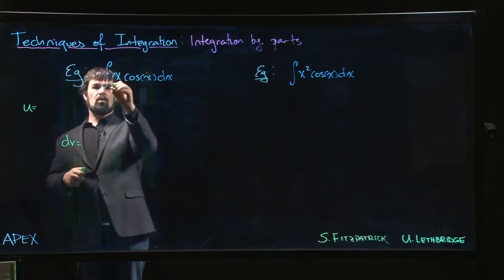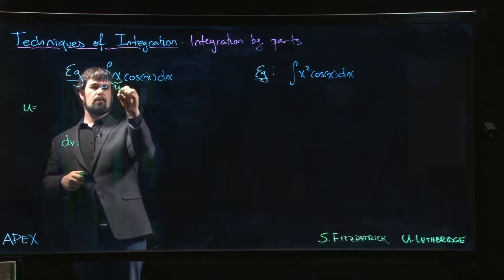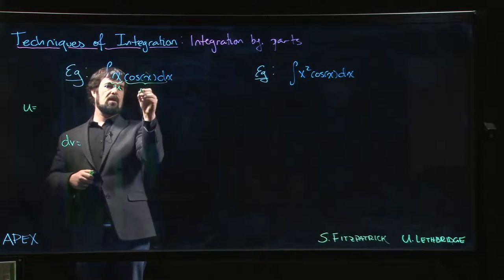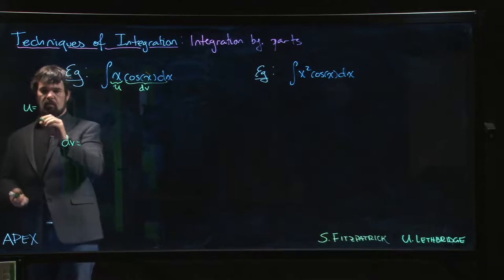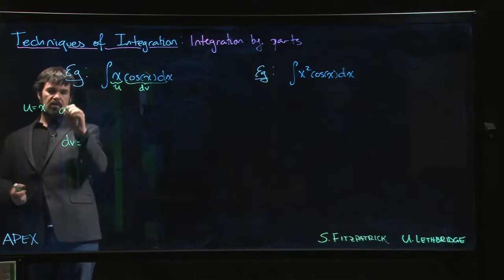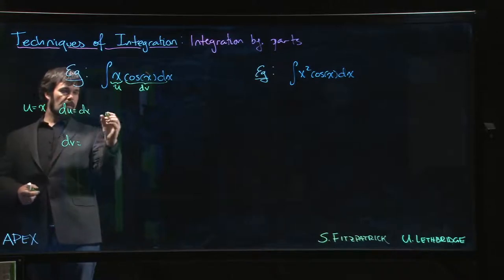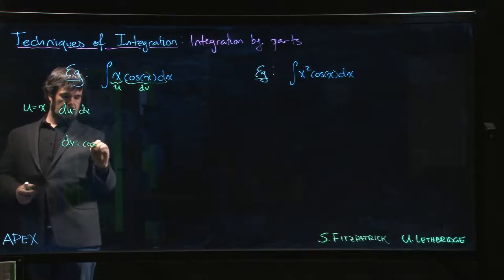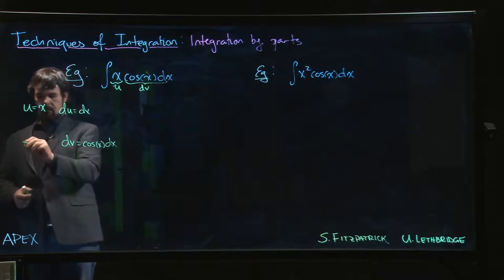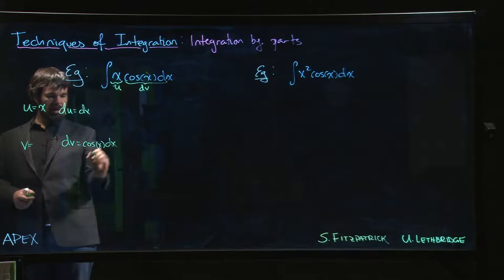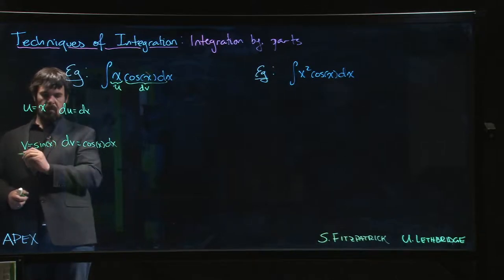So what we'll do is we'll take that to be our u. We'll take that to be our dv. So let's fill that out. So u is equal to x. That makes du equal to dx. If dv is cos x dx, well, we know where that must have come from. Cos x dx is the differential of sine.